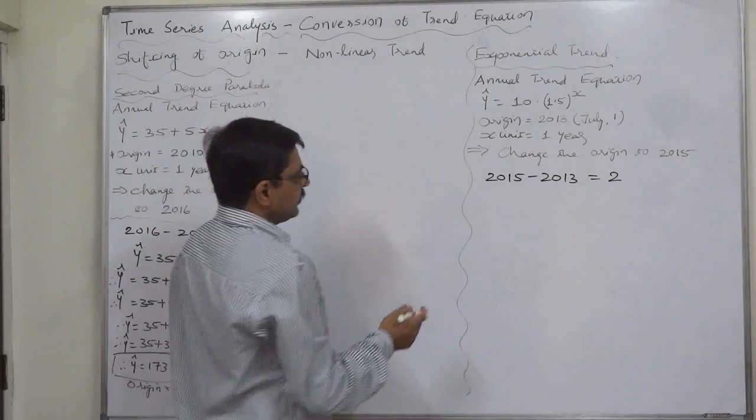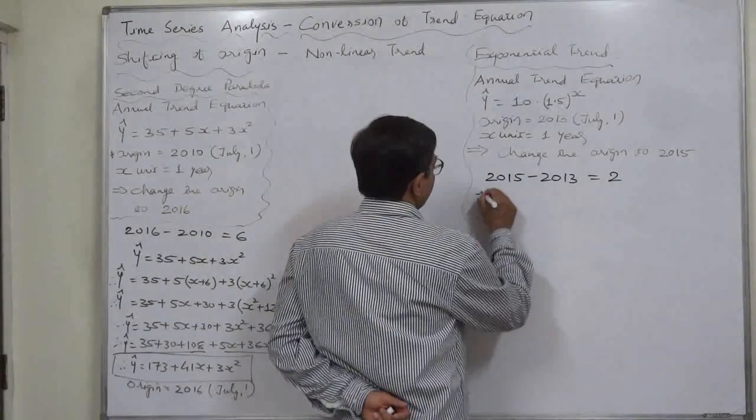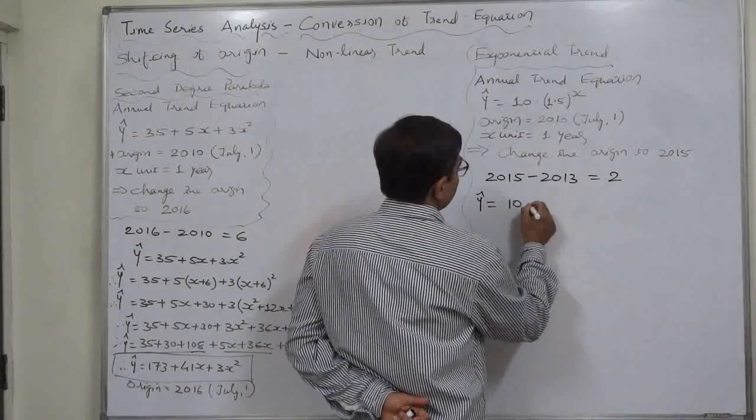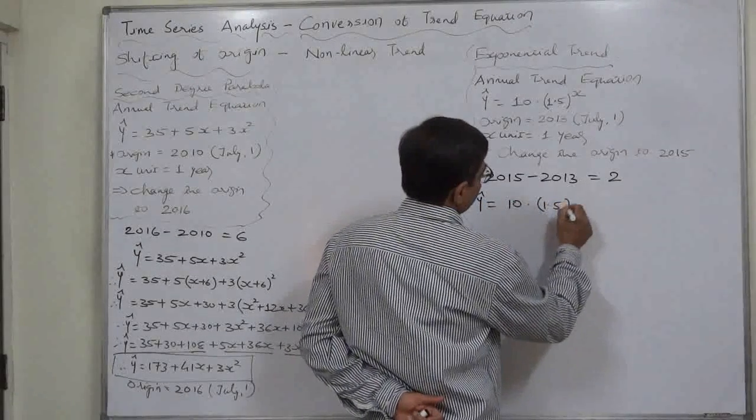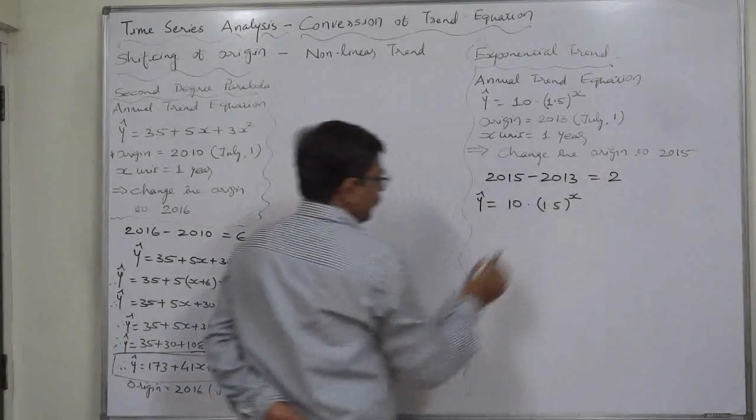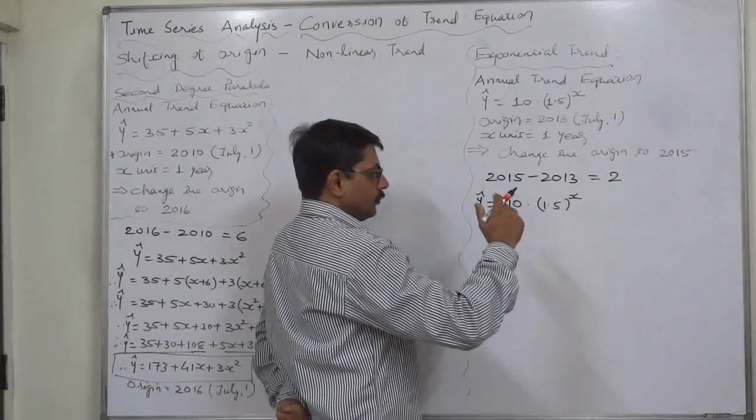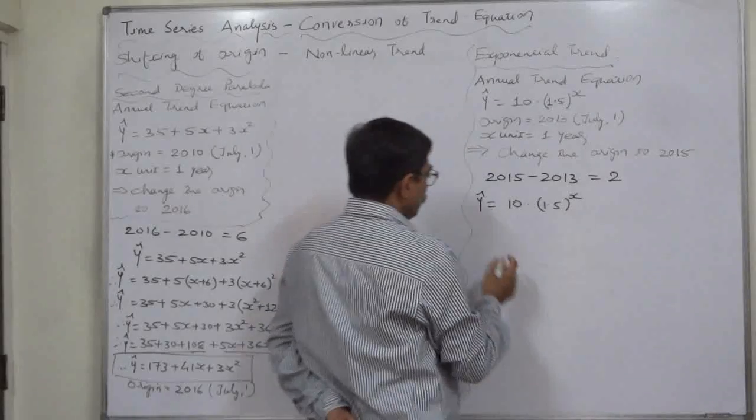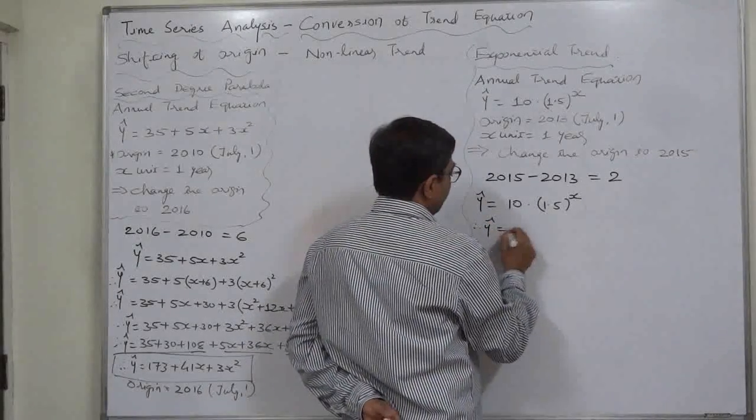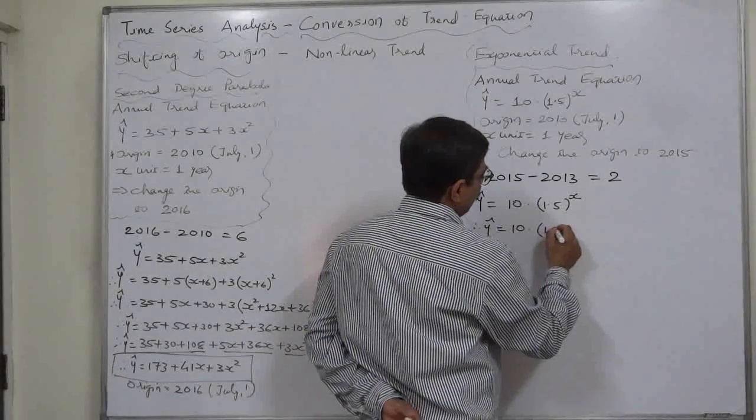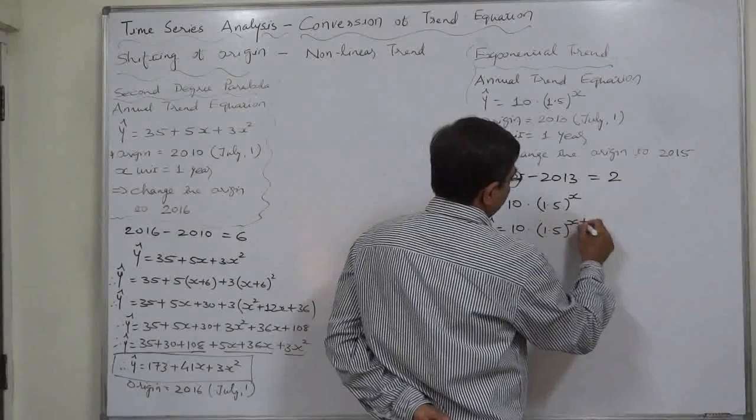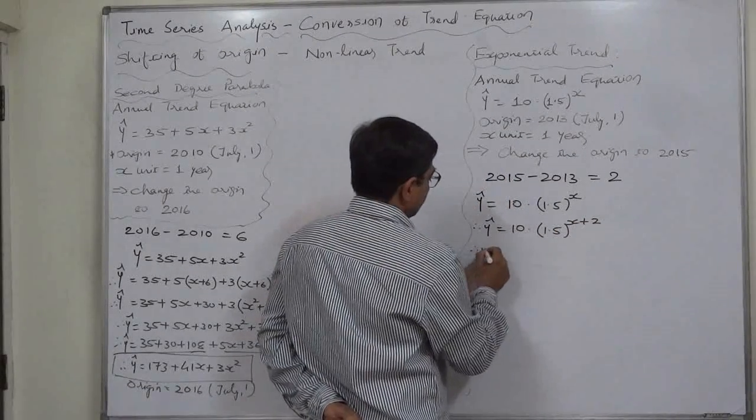The original trend given is y equals to 10 into 1.5 raise to x. Now we want to put x forward by 2 years, so it will be like 10 into 1.5 raise to x plus 2.